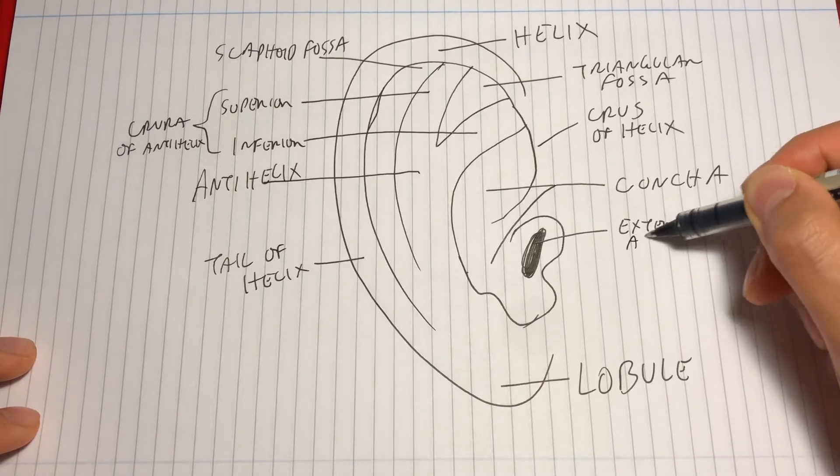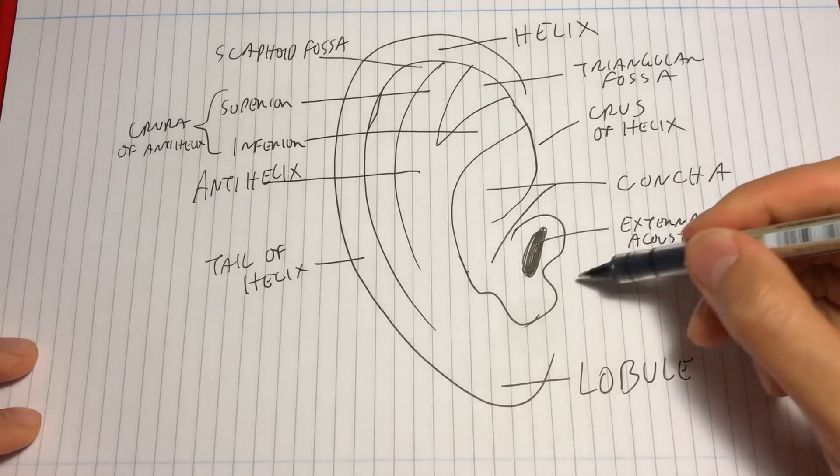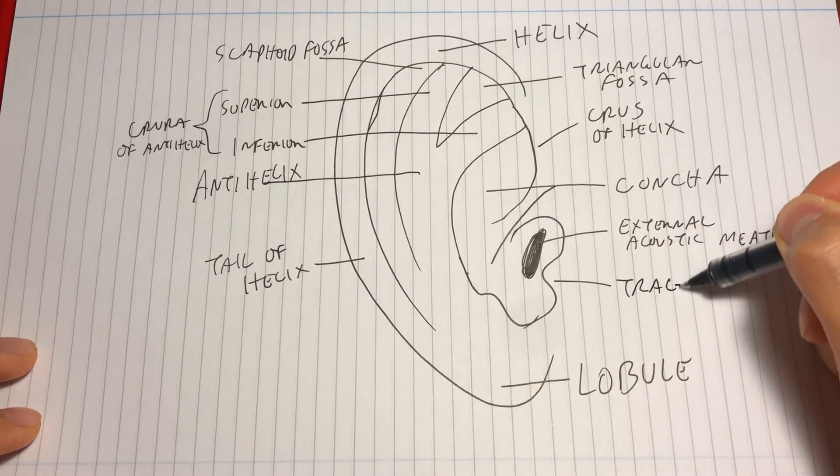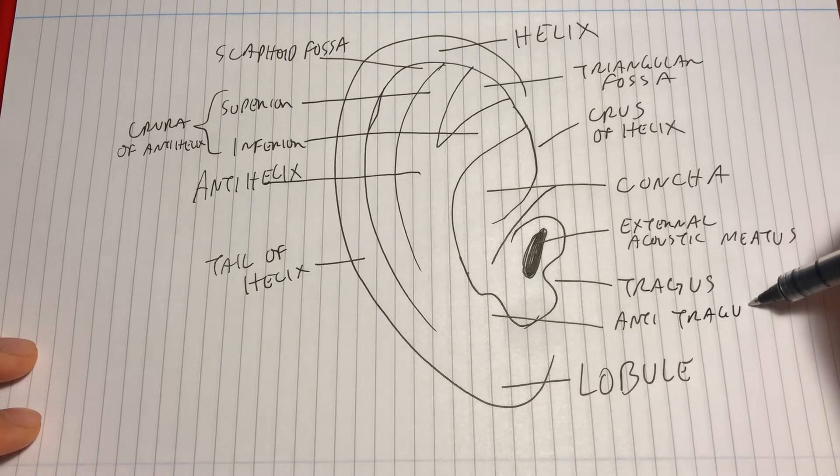Just anterior to the external acoustic meatus is the tragus, which you can feel on yourself covering the entrance. And opposite the tragus is the anti-tragus.